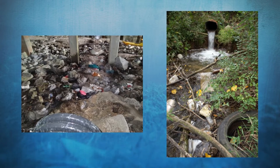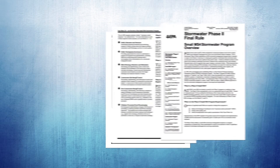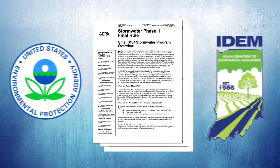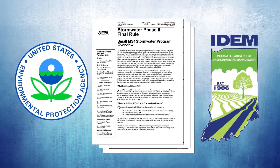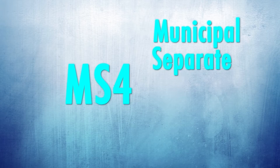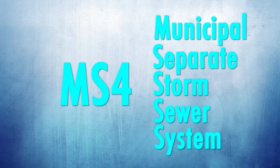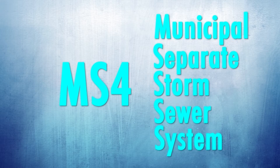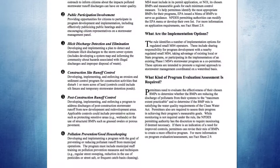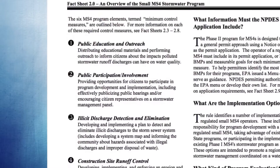Before it is released into the environment. To address the contaminated stormwater issue, EPA and IDEM, through their Clean Water Act authority, issue Municipal Separate Storm Sewer System, or MS4, permits to communities like yours. These permits require your community to implement activities related to six program areas.